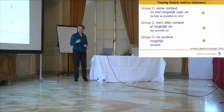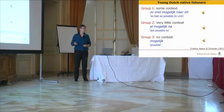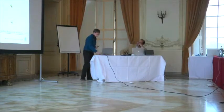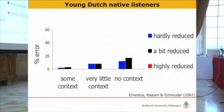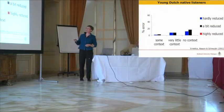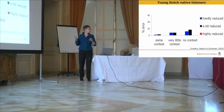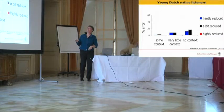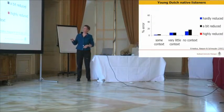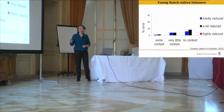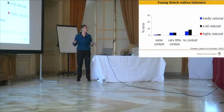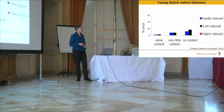The word 'mogelijk' was pronounced as 'mook,' but it is written as 'mogelijk' — so this is really a reduced pronunciation variant. Here you see what people did. The percentages of errors for words that were hardly reduced or a bit reduced, when presented with full context, with very little context, or with no context at all, show that yes, there were some errors when no context was given, but overall it wasn't that bad — in at least one out of five cases they were able to write down the target word.